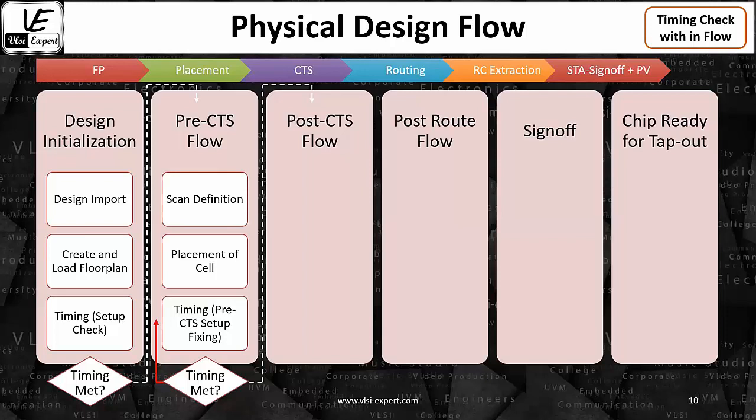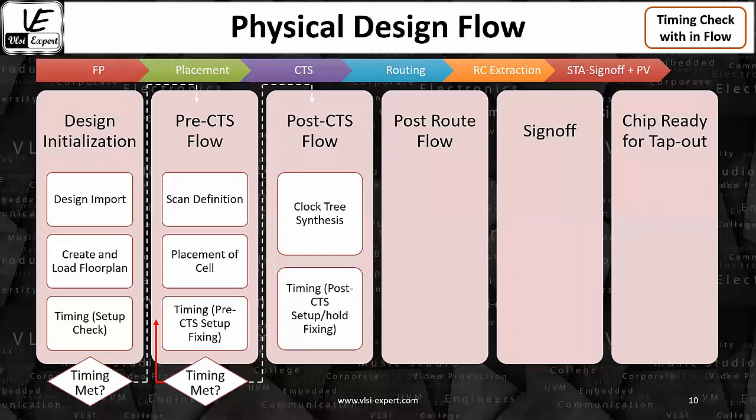Post-CTS means now we are going to do the CTS — we will do the clock tree synthesis and build the clock tree. After the clock tree, we do the timing check again. Till now, the clock tree was not there — it was ideal. Now the clock tree is there. In the clock tree, we are doing two things: we are routing the clock — what type of metal we are going to use, the width of the metal, the type of buffers, and everything. That is a part of the clock tree.